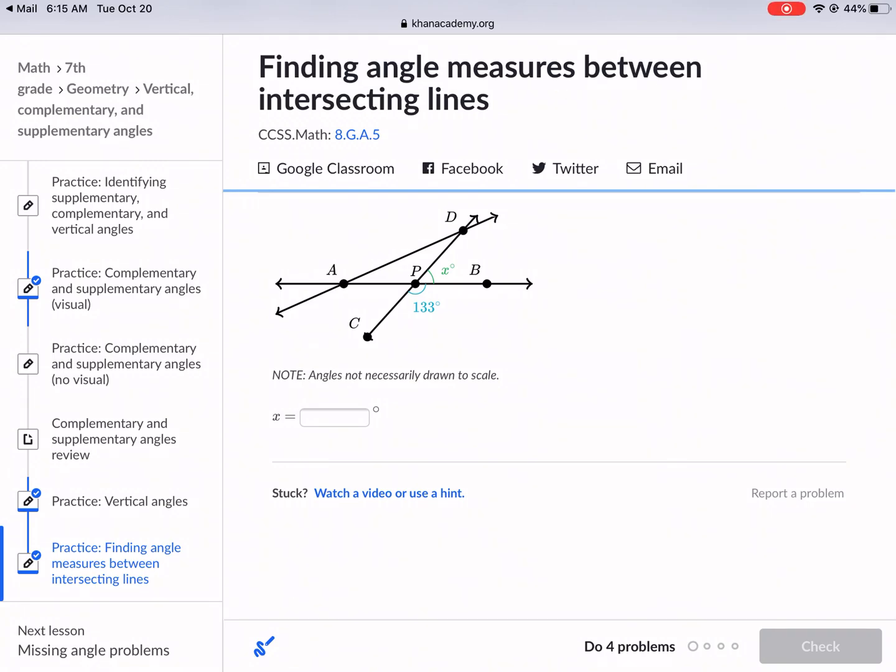Welcome everyone to another Khan Academy tutorial. Today we are finding angle measures between intersecting lines. I'm Mr. West. Let's get started.